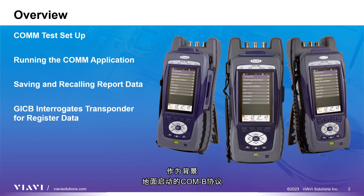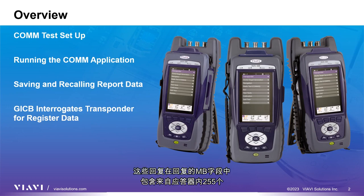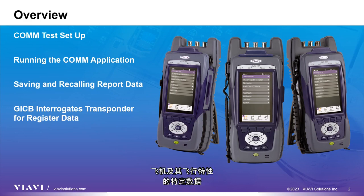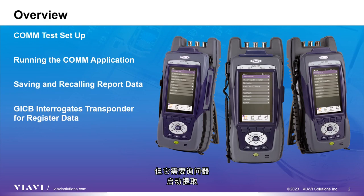As background, the ground-initiated COM-B protocol allows the interrogator to extract COM-B replies from a transponder. These replies contain data from one of the 255 registers within the transponder in the M-B field of the reply. This data is used by ground-based interrogators and ATC to extract specific data about the aircraft and its flight characteristics through the use of MODES protocols. This is similar to ADS-B, but it requires the interrogator to initiate the extraction.